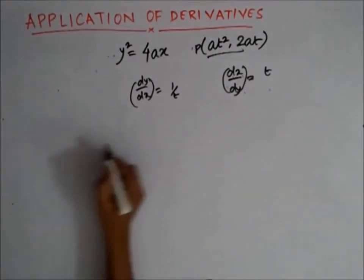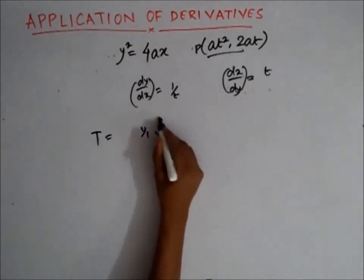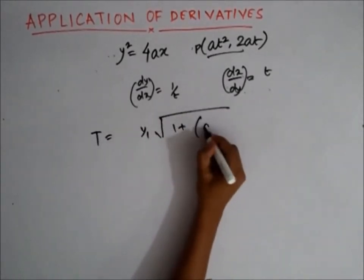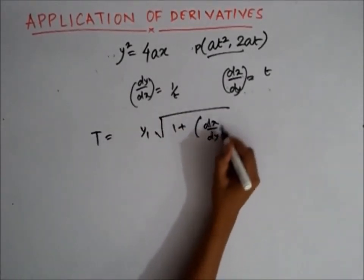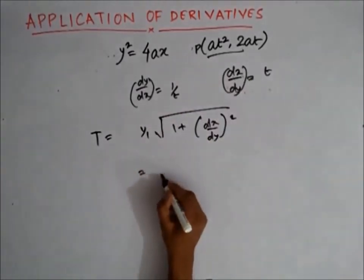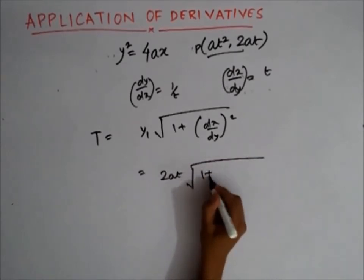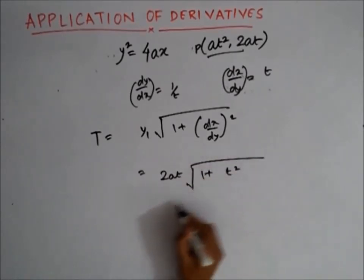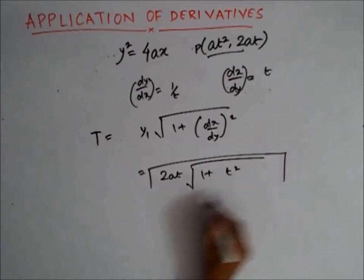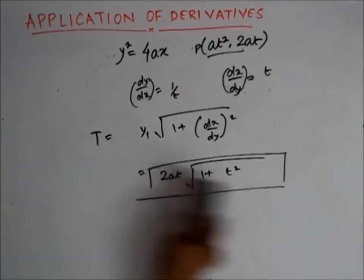I will find the length of the tangent as an example and leave the rest to you. The length of the tangent is given by |y1| · √(1 + (dx/dy)²). Here y1 = 2at and dx/dy = t. So the length of the tangent is 2at · √(1 + t²).